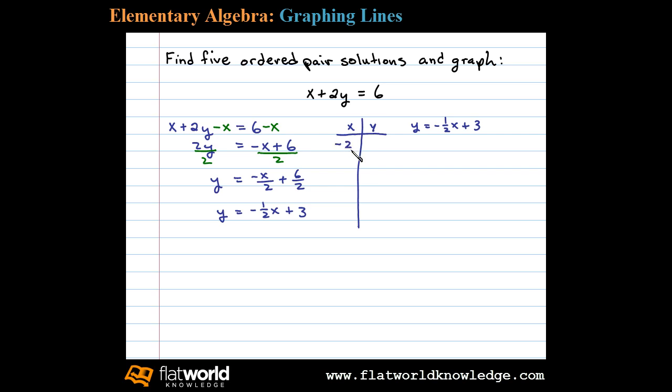Let's start with negative 2, 0, 2, 4, and 6. When you substitute these in you'll see we can avoid fractional answers. When you substitute in negative 2 the 2's cancel here and that leaves us with negative 1, 1 times negative 1 which is 1 plus 3 leaves us with 4.